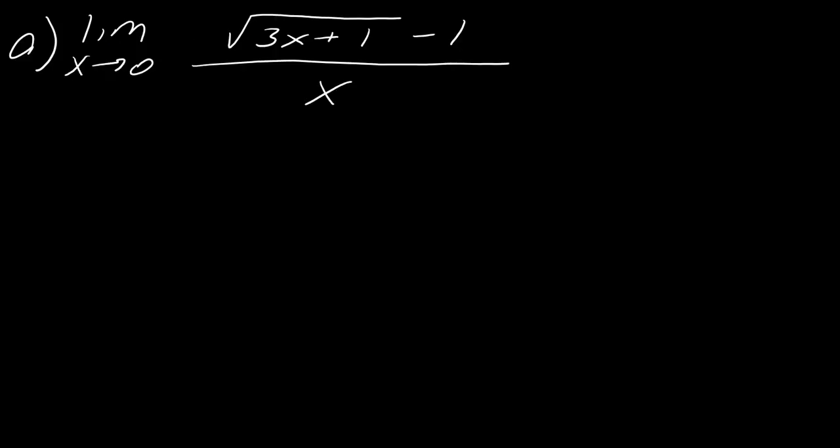Okay, so starting with this first one, you can see that you get zero over zero, so a really common trick that you'll use in this case is multiplying by the conjugate, which in this case is found by taking whatever that square root is and then flipping the sign between the two terms. So here's the conjugate.